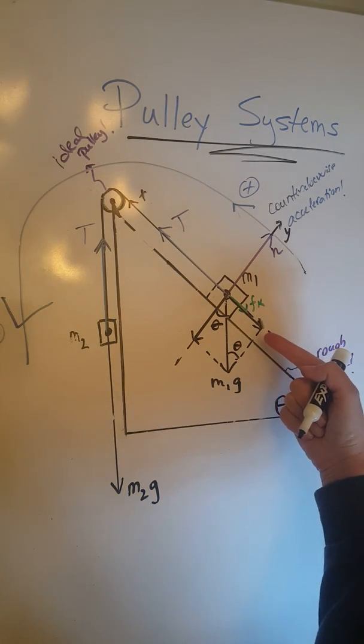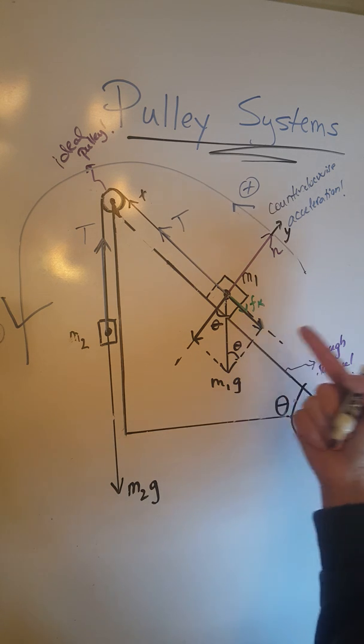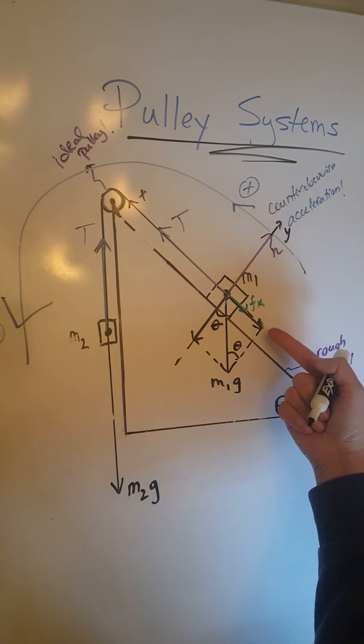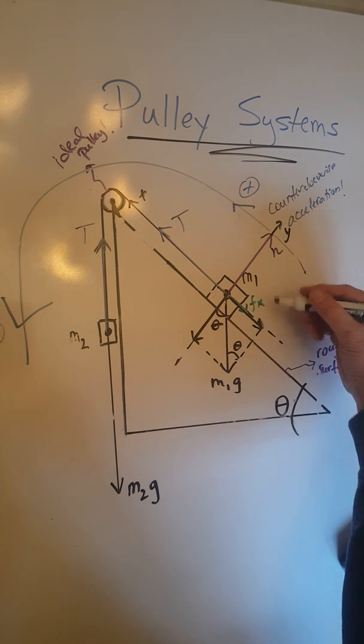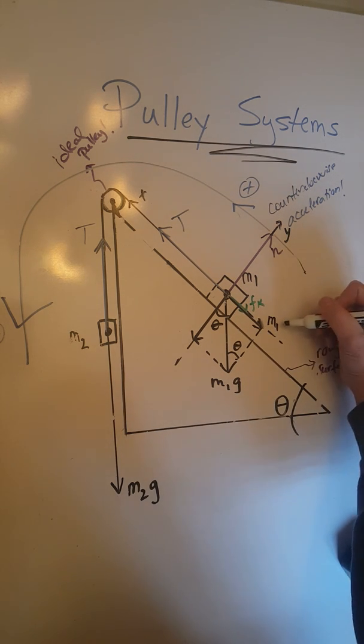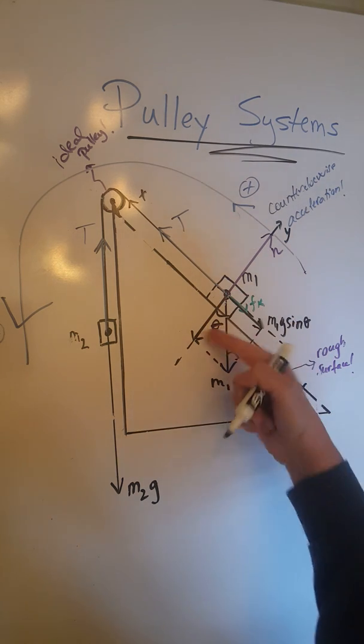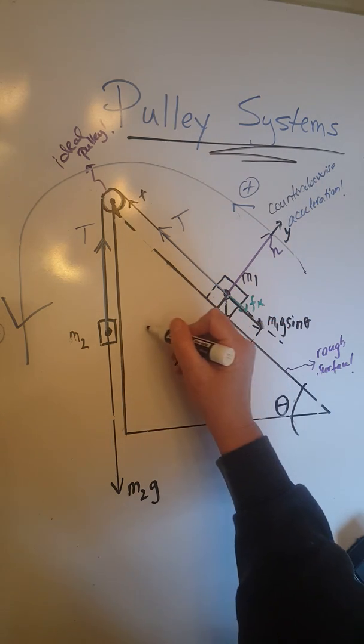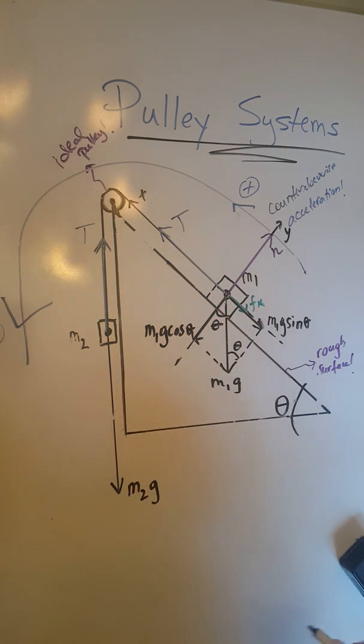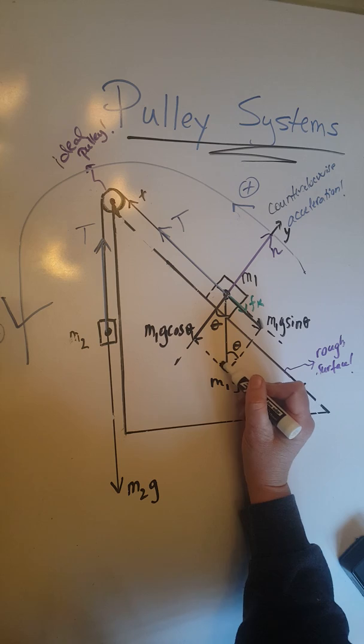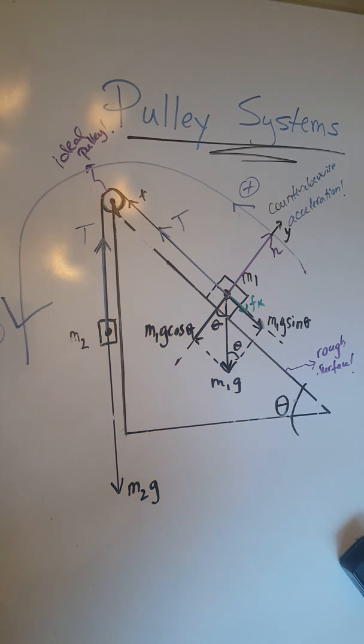When we look at this angle theta, that fact is going to help us realize that this component is the opposite of theta, so it will be M1g sin theta. And this component here is the adjacent to theta, so it must be M1g cos theta. Now we are ready to do the magnitude check for both objects.